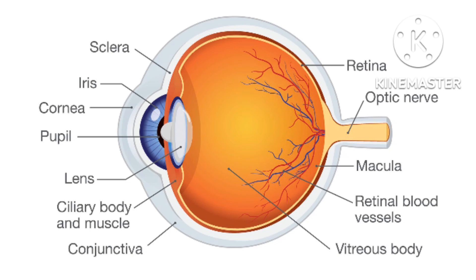Sclera is the wide visible portion of our eye which protects the inner part. Conjunctiva is the next layer to sclera and it keeps our eyes moist and clear. Cornea is the transparent front part of our eye — its main function is to reflect light along with the lens. Iris is the pigmented colored portion and it controls the diameter of the pupil. Pupil is the small aperture located in the center of the iris; it allows light to enter and focus on the retina.